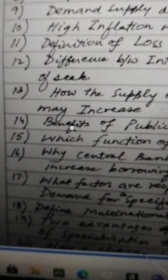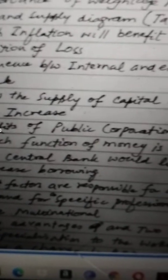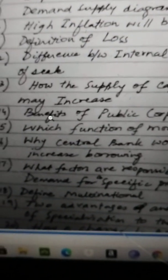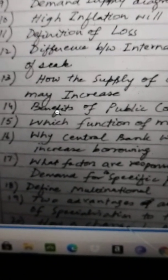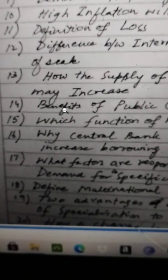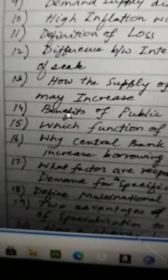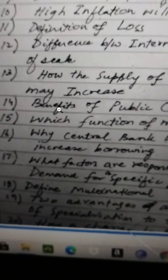As for enterprise — how the supply of enterprise increases — factors include training, education, government support, favorable economic conditions, and provision of things which are really good for starting a business. All these will increase the supply of enterprise.